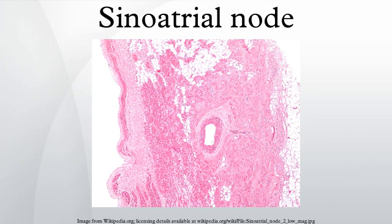Histology: The sinoatrial node is subepicardial at the lateral aspect of the junction of the superior vena cava and right atrium. Its deep aspect abuts cardiac myocytes belonging to the right atrium. Its superficial aspect is covered by adipose tissue. The SA node fibers vaguely resemble cardiac myocytes; however, they are measurably thinner.